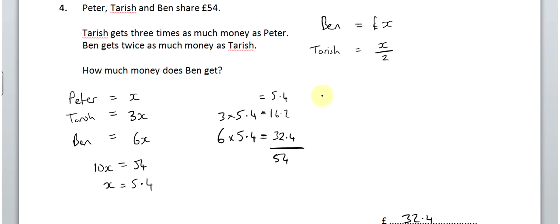Now, you might have chosen to attack this in yet another way of guessing. You might have chosen to do it using ratio. So, if we say Peter gets, so we've got Peter, Tarish, and Ben. And, Peter gets 1. Tarish gets 3 times as much as that, so he gets 3. And, Ben gets 6 times as much as that. So, we've got 1 to 3 to 6 as our ratio. And, then you've got your total, which is 10. And, then the 54. And, this becomes a ratio problem. So, you could do it that way. Or, you could just guess values. The only time guessing won't get you any marks is if they tell you to use an algebraic method. In which case, guessing will lose you marks. So, just be careful about that.